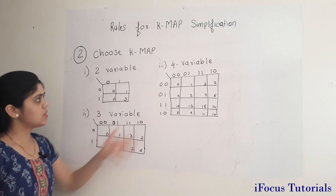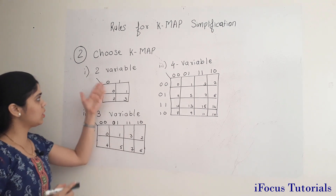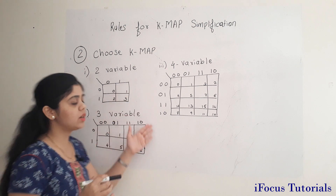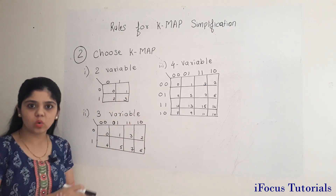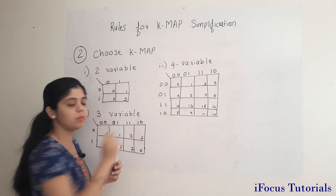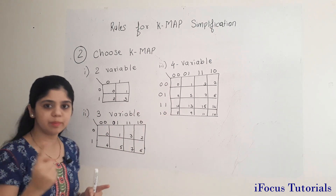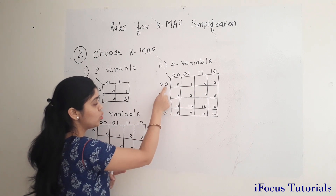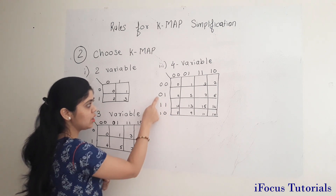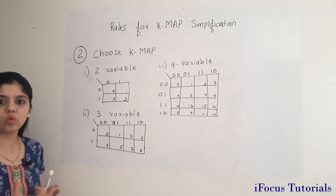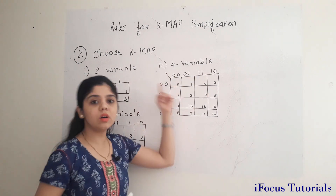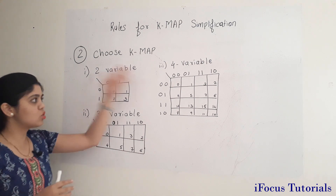If you observe the structure of the KMAP, there are combinations of 0s and 1s written on it. These are grey codes, not a binary sequence. In a grey code sequence, when moving from one number to the next, only a single bit changes. For example, from 00 to 01, only the second bit changes. It is necessary to use a grey code sequence in KMAP — you cannot use a binary sequence.